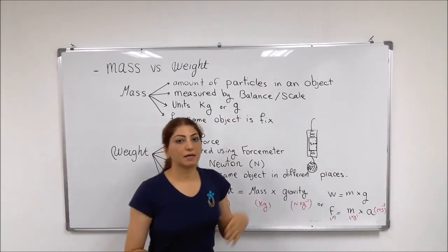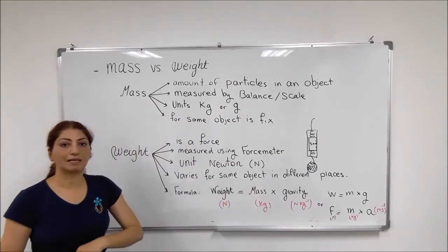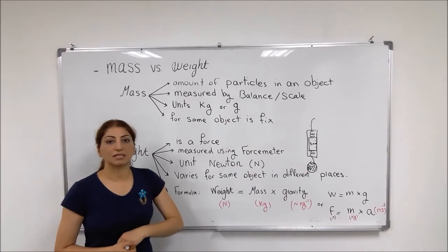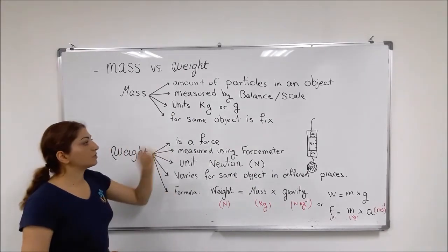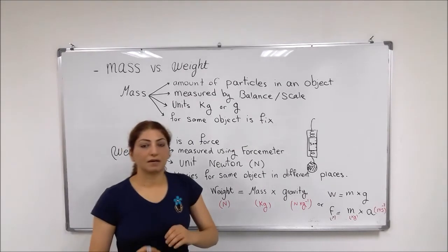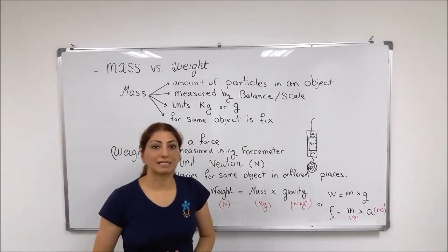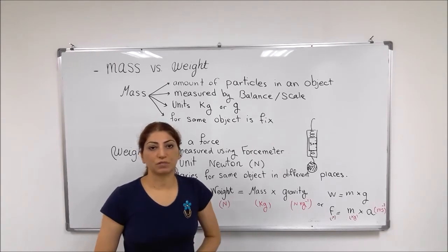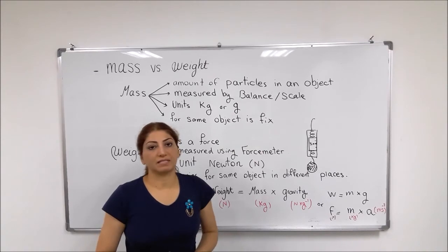So now after that, we have the unit of the mass and we say that it is measured in kilograms or grams. And then for some object, if you have the object with the same amount of the particles with the same mass it has, of course this mass won't change for the same object and everywhere will be the same.